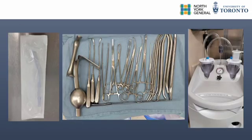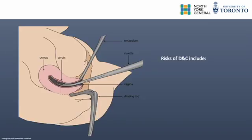Dilation and curettage, also termed DNC, is generally considered to be the simplest and most basic gynecological procedure. While DNC is a very safe procedure, with complications being rare, complications include uterine perforation with subsequent hemorrhage or injury to surrounding viscera, cervical injury, infection, and the formation of intrauterine adhesions.